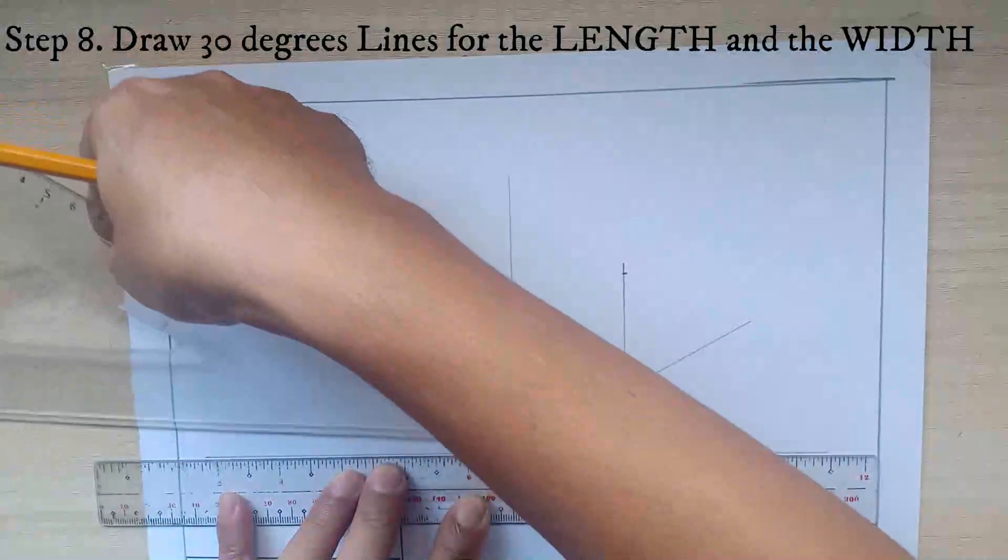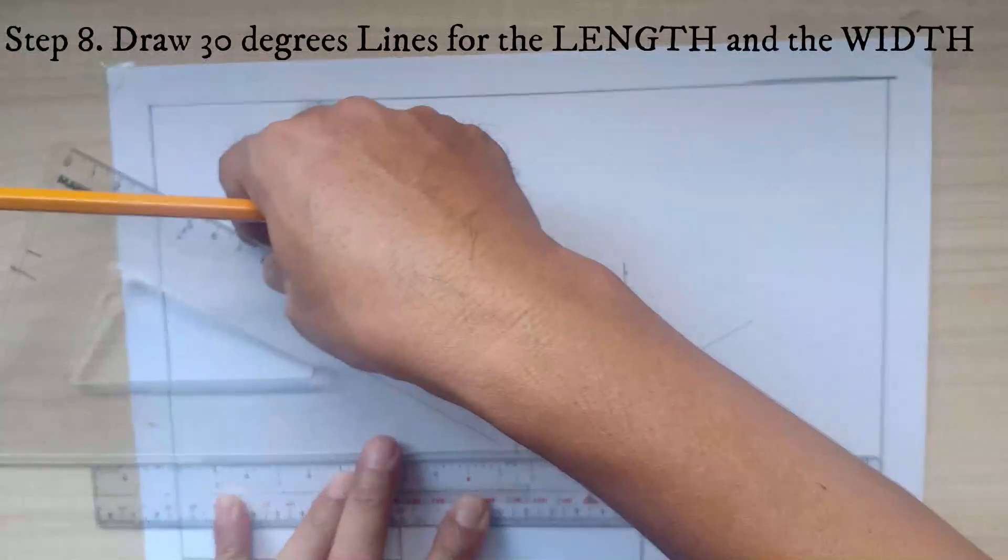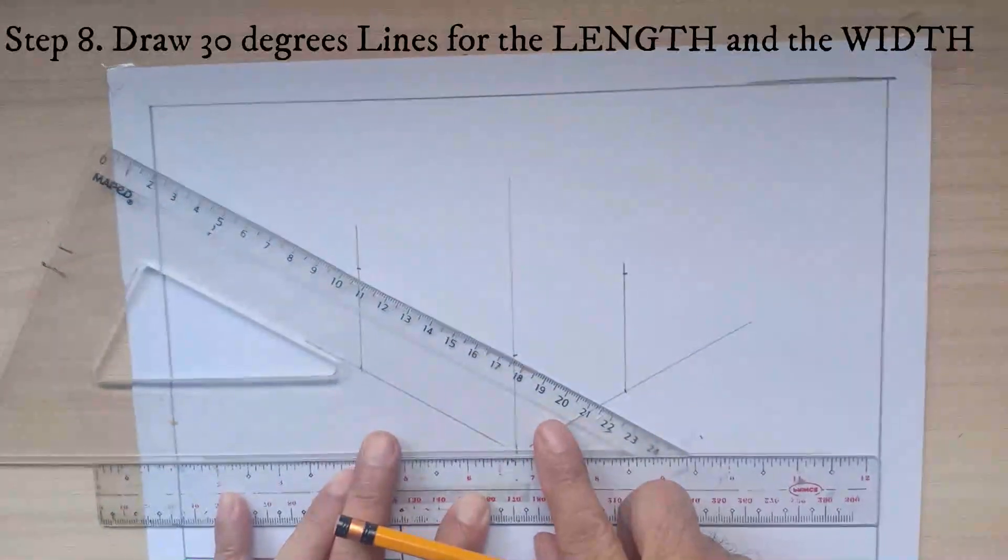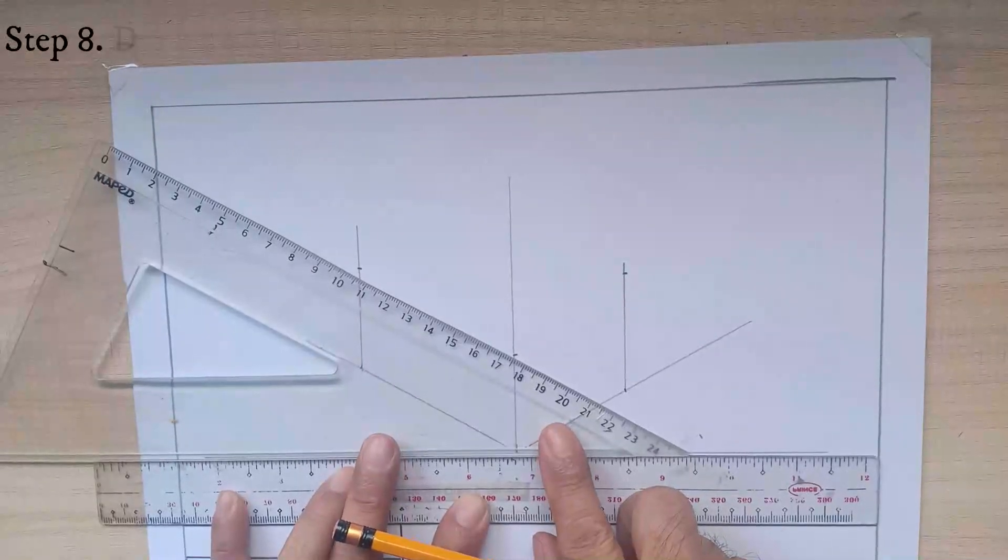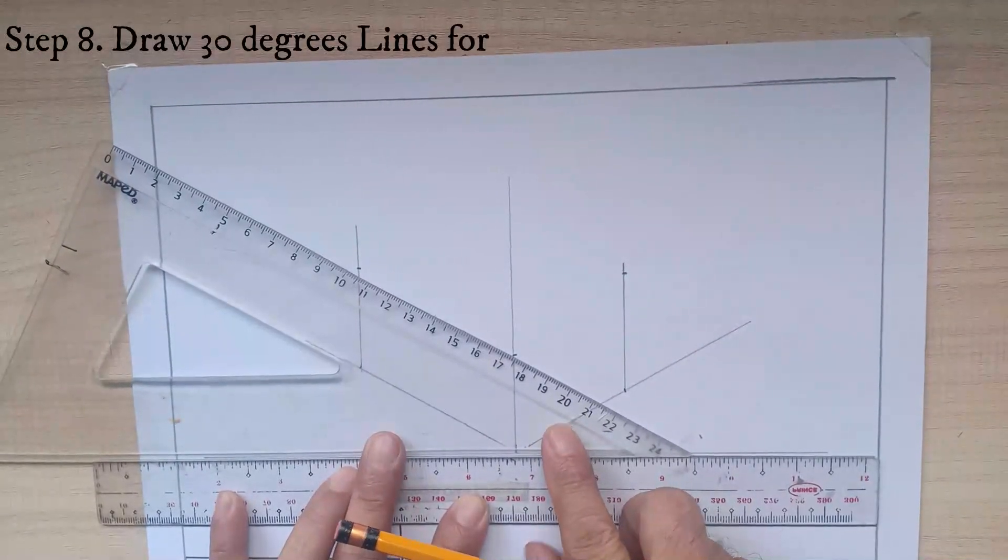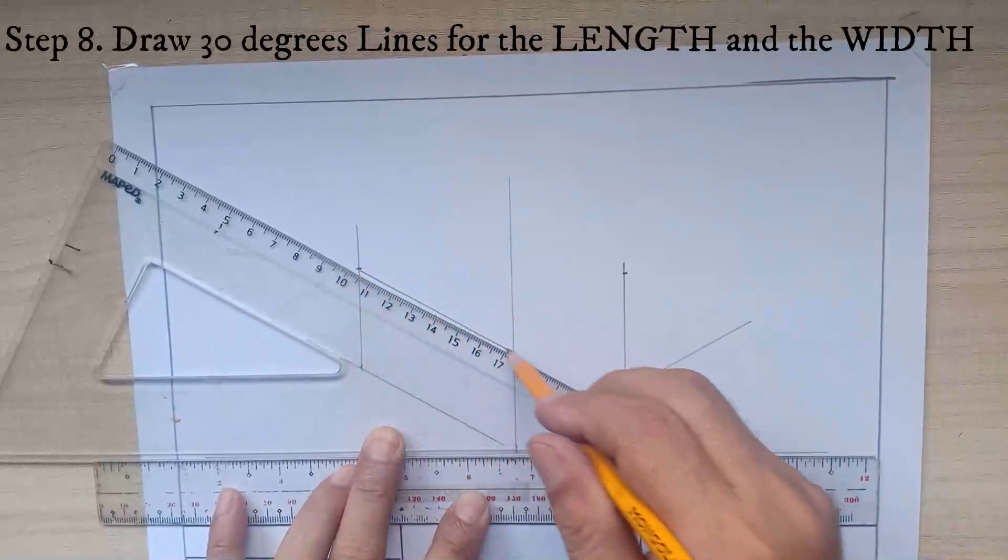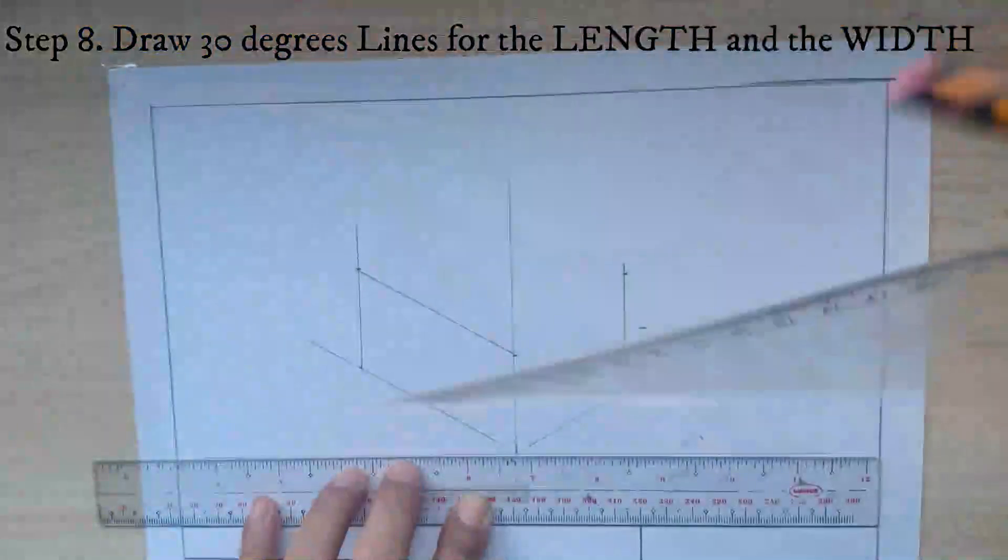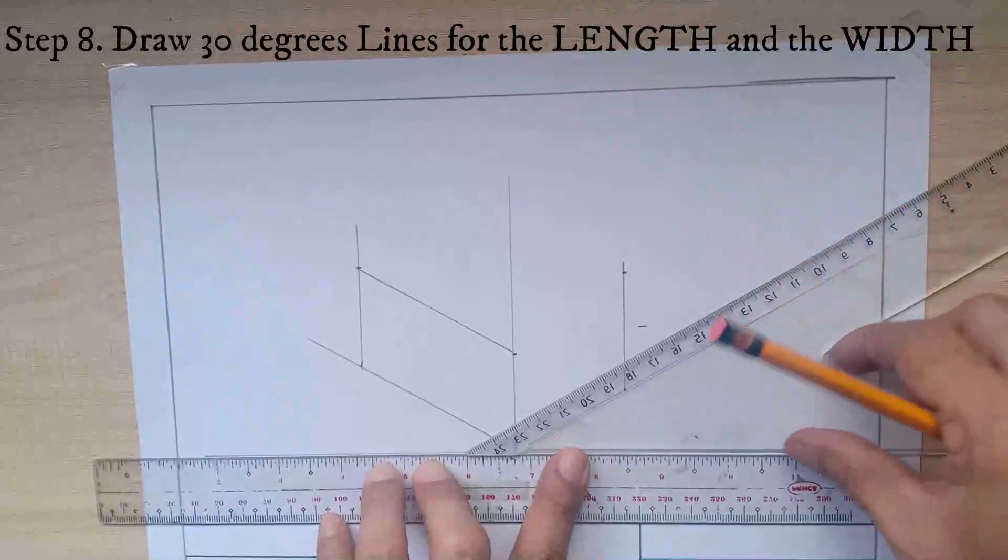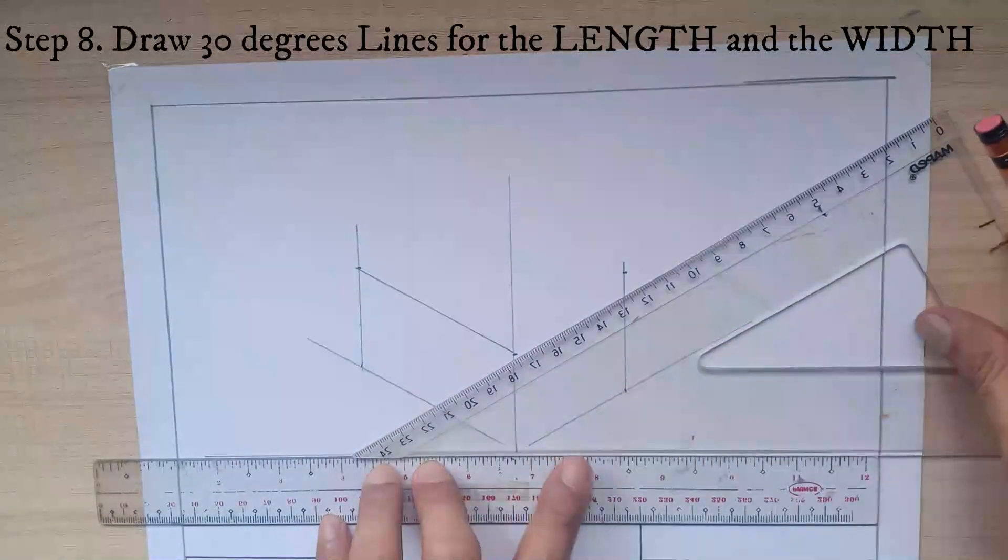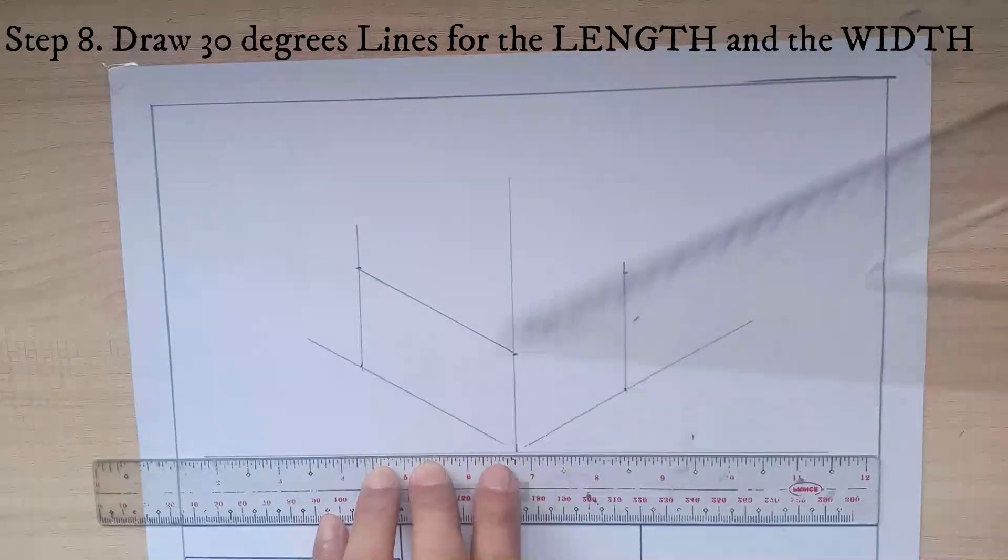Then through the use of your 30 by 60 triangle, plot it to the 30 degrees and then draw the 30 degrees line for the length and the 30 degrees line for the width.